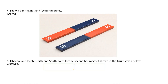Draw a magnet and locate the poles — North and South. They are placed at opposite ends because unlike poles attract each other. If you cut a bar magnet into two halves, each half behaves like an independent bar magnet with its own North and South poles. So you write NS on one half and NS on the other half — or SN-NS arrangement like that.